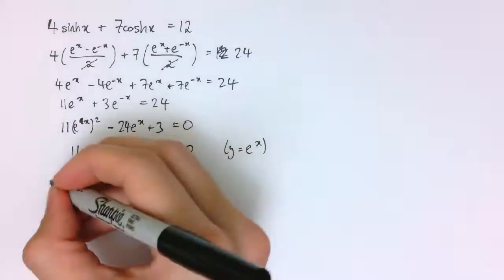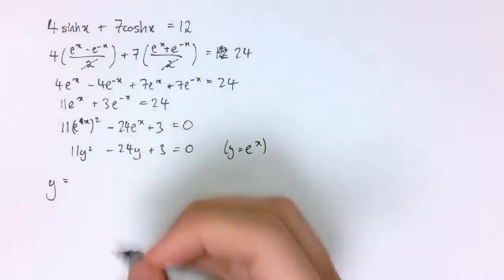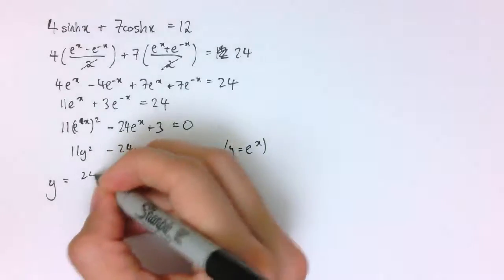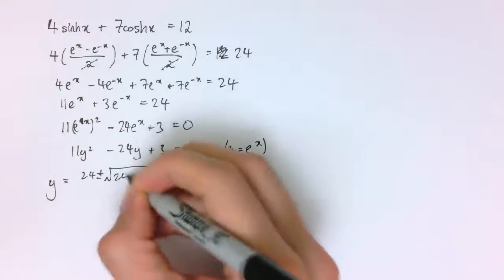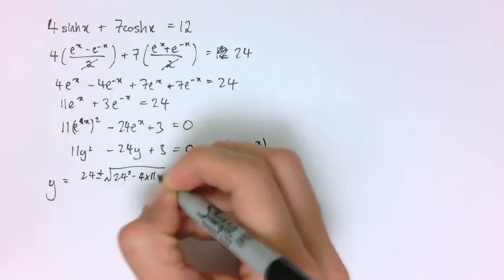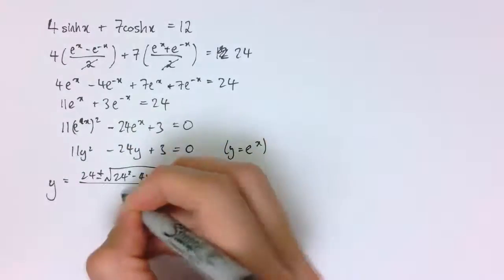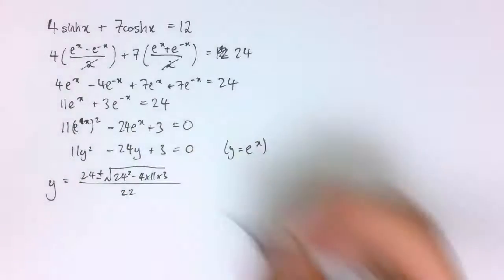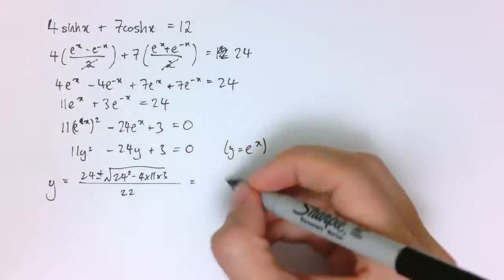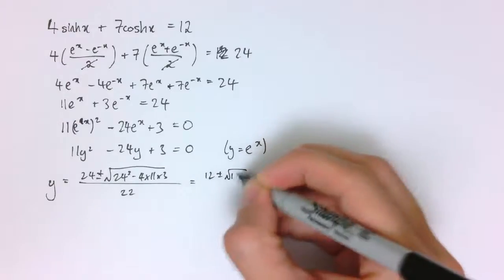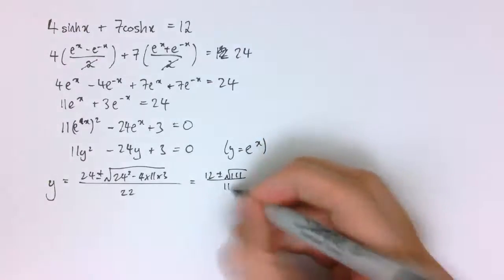So I can solve this quadratic equation, perhaps I'll just use the formula and say y equals 24 plus or minus the square root of 24² minus 4 times 11 times 3, all divided by 2 times 11 which is 22. So that simplifies down to 12 plus or minus the square root of 111 divided by 11.